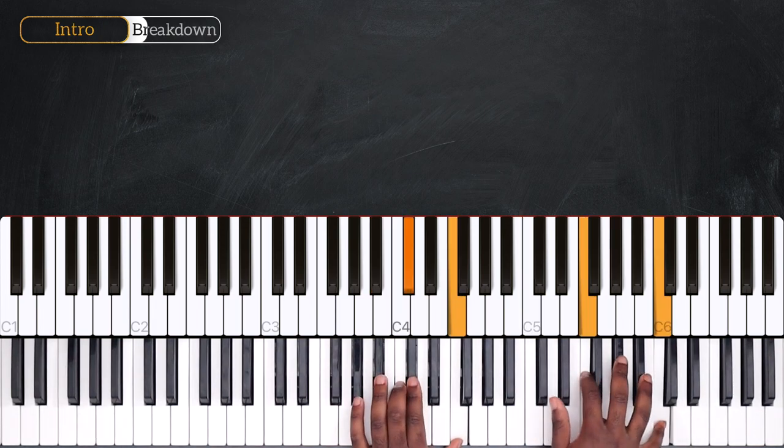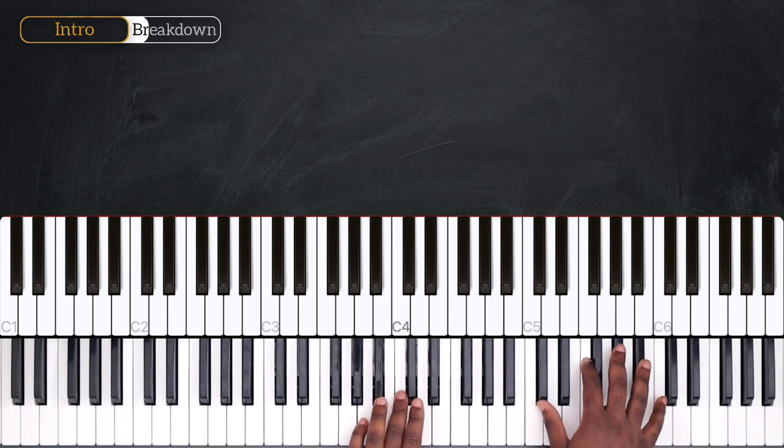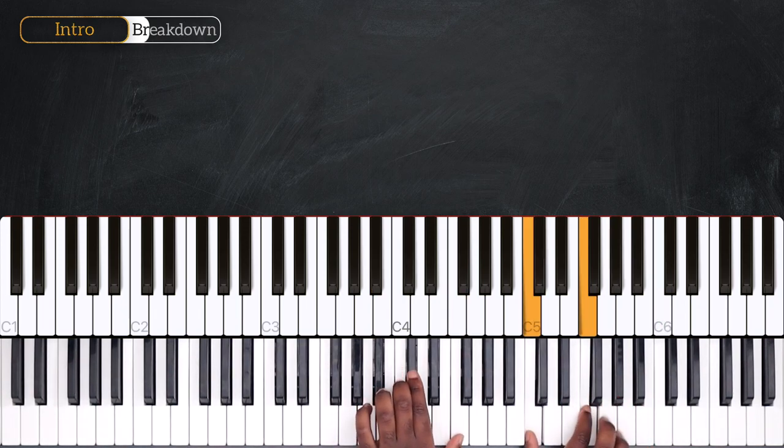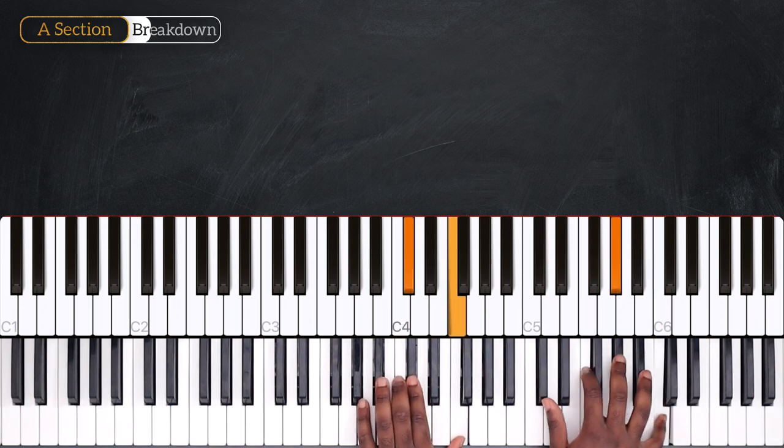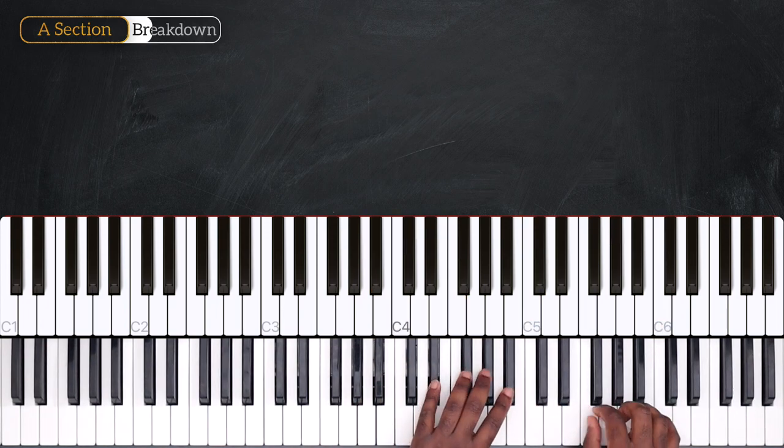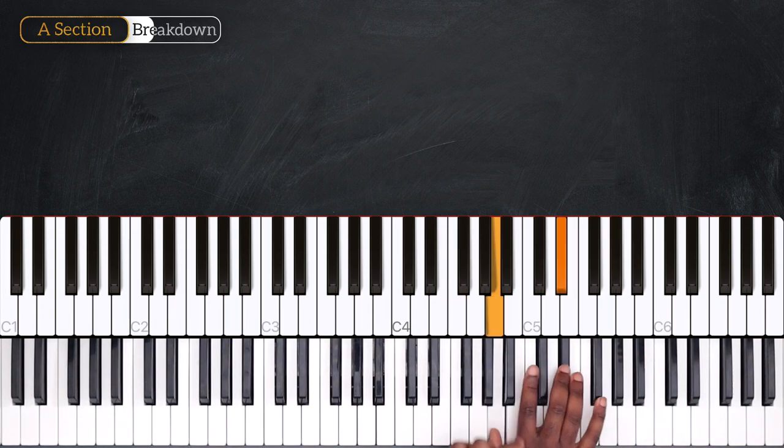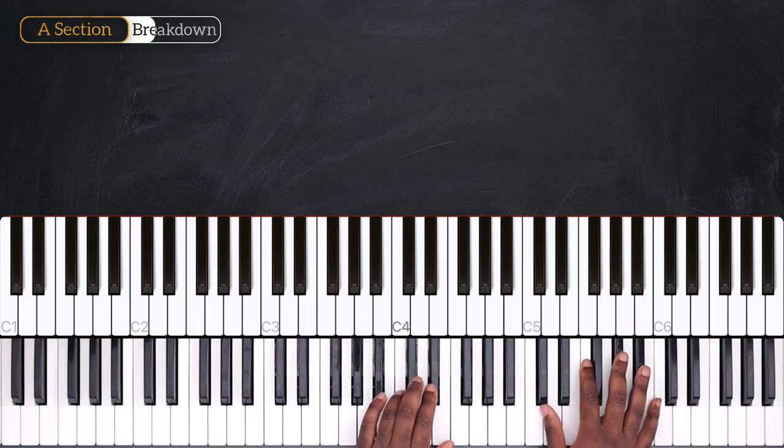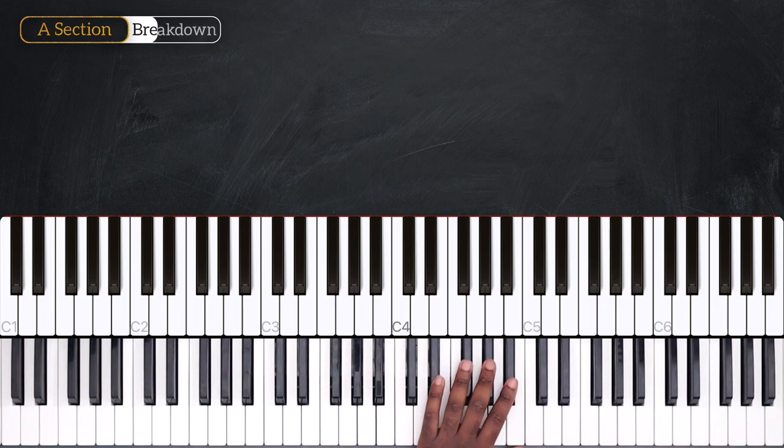1, 2, 3, 4. And directly after that we're going to start the A section. It goes like this. So again, I played this pattern on Bb minor. I played that twice and then I went up, up a 4th on Eb.